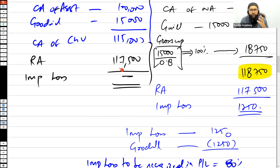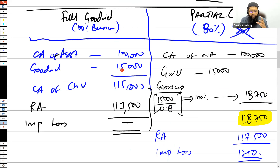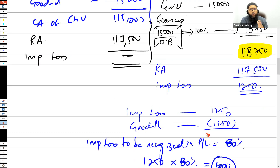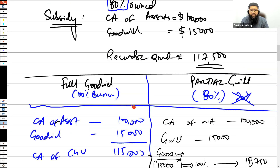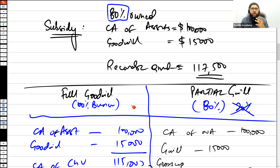To summarize: if the goodwill is full goodwill, you do not gross up because it is already 100%. If it is partial goodwill, you gross up to get the total amount. In this case, the impairment loss recognized in P&L is 80% — which is $1,000. This video explained how the impairment loss arising on a subsidiary is determined under full goodwill and partial goodwill. Thank you very much for your time, and keep asking queries — that gives me more reasons to prepare videos.